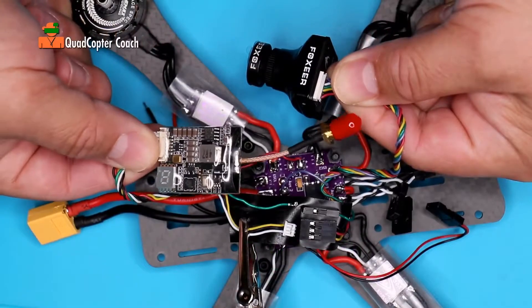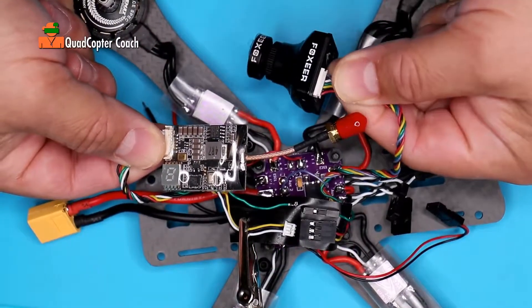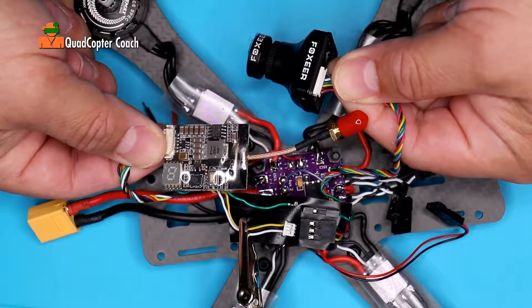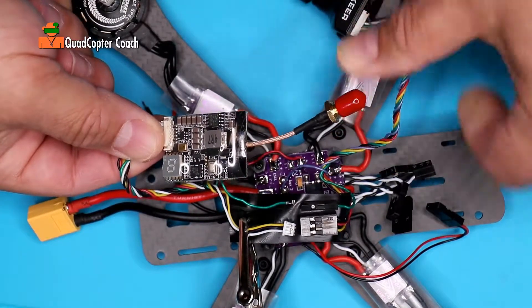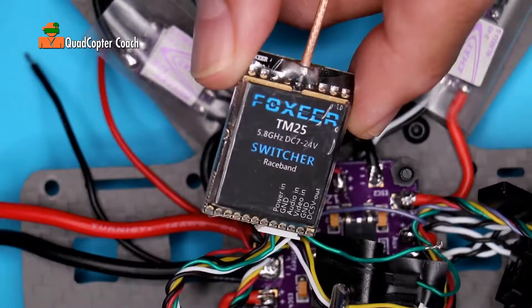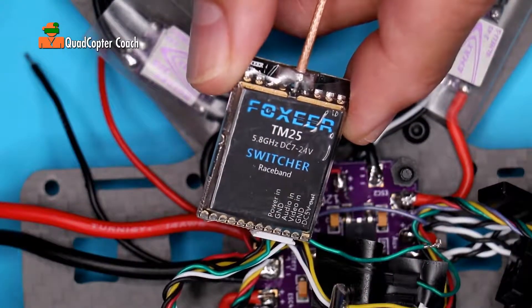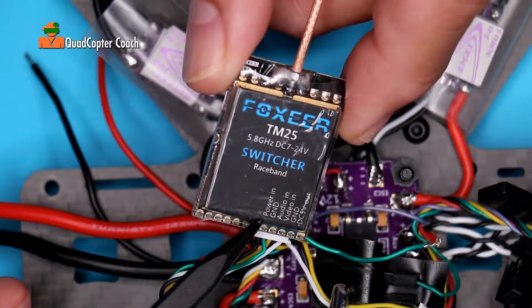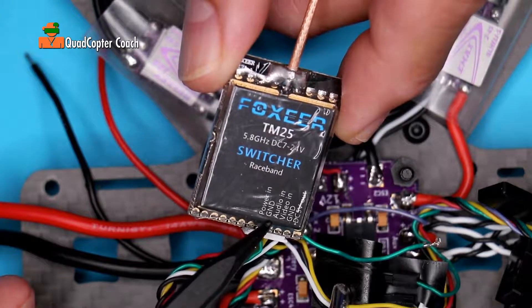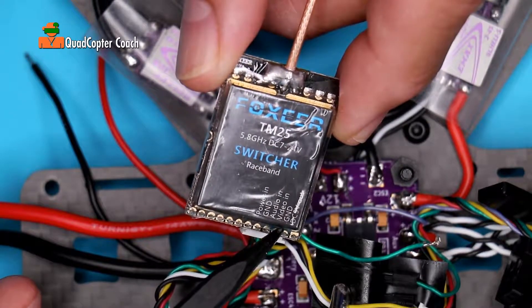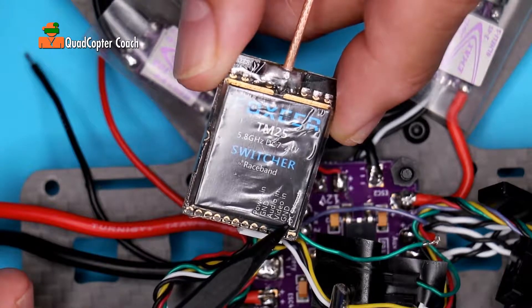It's time to wire up our video transmitter to our camera for video, audio, power and ground. Let's start with the video transmitter. Looking at the bottom of the video transmitter you'll notice the notations: power in, ground, audio in, video in, ground and 5 volt power out.